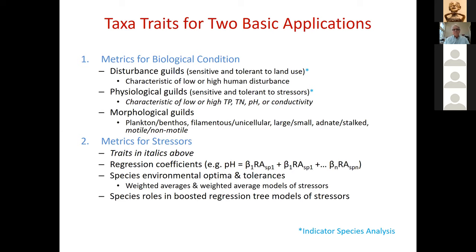The same can be done for physiological guilds, where organisms are sensitive or tolerant to specific stressors such as nutrients — phosphorus and nitrogen — pH, conductivity, and silt. We can characterize taxa as low or high for phosphorus, nitrogen, pH, conductivity, and other stressors. There are also morphological guilds, which strongly relate to ecosystem functions, particularly food web structure: plankton, benthos, filamentous algae, whether they're adnate, and motile versus non-motile.